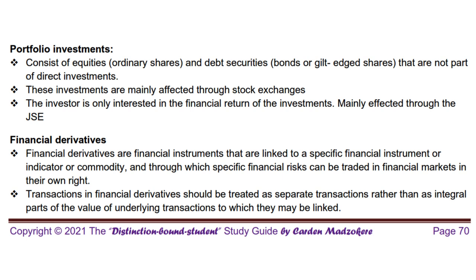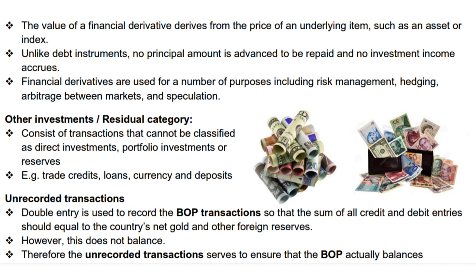Category 3: Financial derivatives. Financial derivatives are like financial instruments linked to specific things like assets or market indicators. They let you trade specific financial risks in the market. These transactions are treated separately and they don't involve lending money or earning interest. For instance, think of options or futures contracts that derive their value from the price of something else, like gold or a stock index. Category 4: Other investments, or residual category. This is a catch-all category for transactions that don't fit into the previous ones. It includes things like trade credits, money owed between businesses, loans, currency exchanges, and deposits. So, if a South African bank loans money to a foreign business, it's an example of this other investments category.